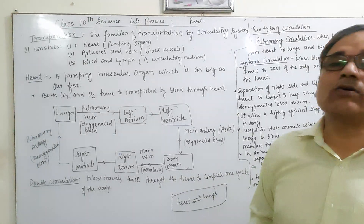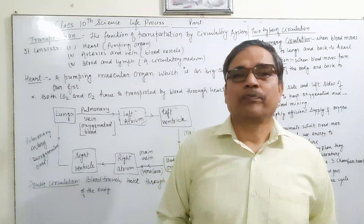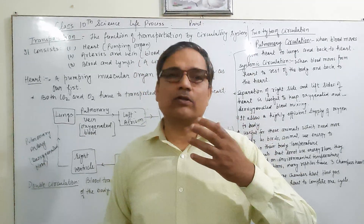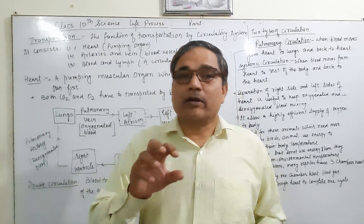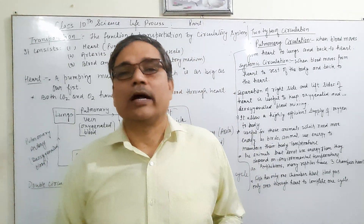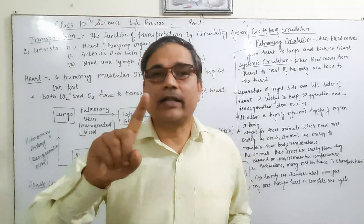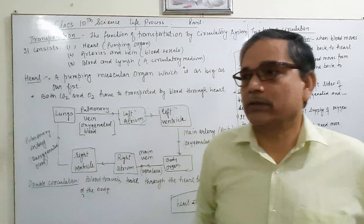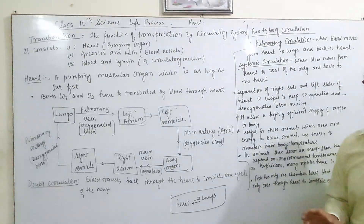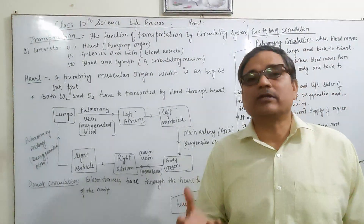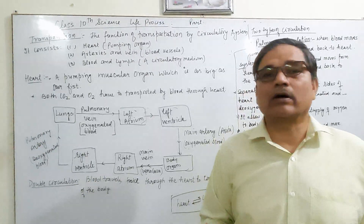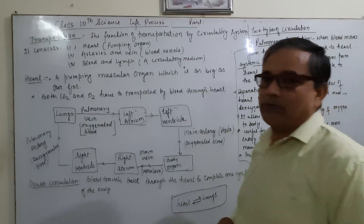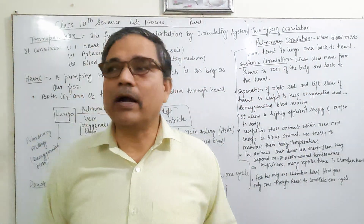Fish have only two chambers in their heart. Fish receive oxygen from water — water enters through the mouth at high pressure and is passed to the gills, where oxygen is extracted from the water and circulated inside the fish. Blood completes only one cycle through the heart in fish — this is single circulation. In amphibians, there is a possibility of mixing of oxygenated and deoxygenated blood because they maintain their body temperature from the outside environment.